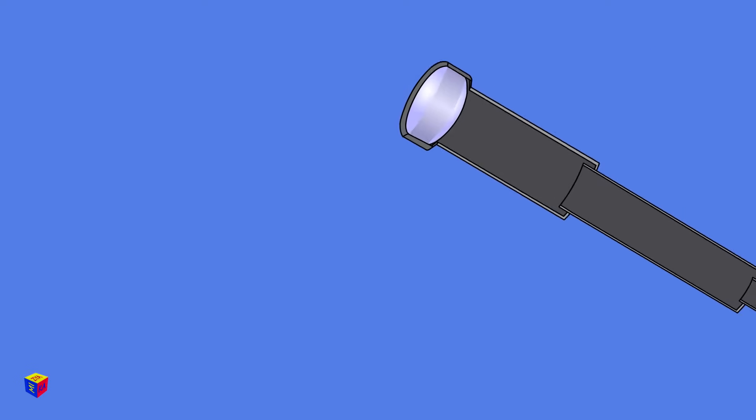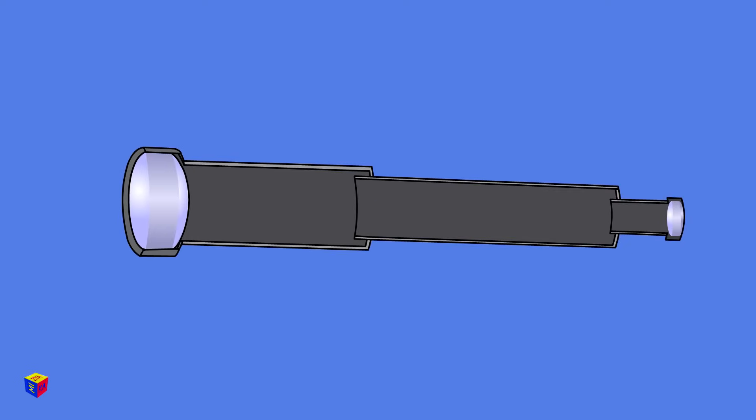The simplest telescopes have only two such lenses. One lens is for the objective, and one for the eyepiece.